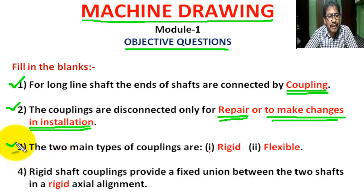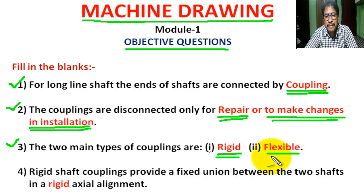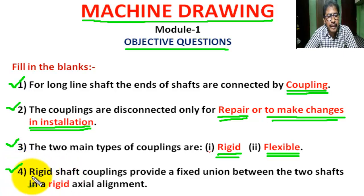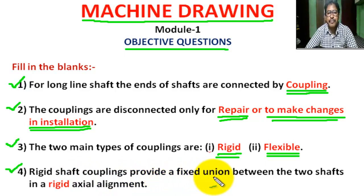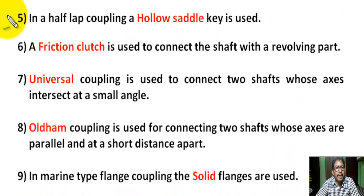Question number 3: The two main types of coupling are rigid coupling and flexible coupling. Question number 4: Rigid shaft coupling provides a fixed union between the two shafts in a rigid axial arrangement.